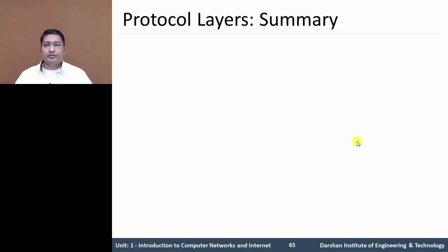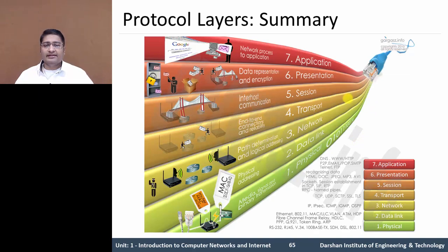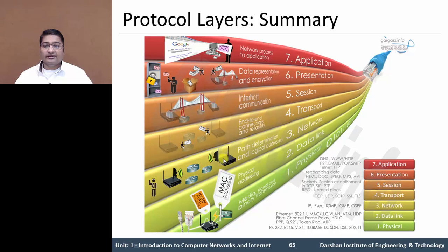Let us see a summary of the Protocol Layers. This graphical representation shows two models. The OSI model includes Application Layer, Presentation Layer, Session Layer, Transport Layer, Network Layer, Data Link Layer, and Physical Layer. At the Physical Layer: Media, Signals, and Binary Transmission. Physical Addressing at the Data Link Layer. Routing and Logical Address at the Network Layer, along with different network devices. End-to-End Connection and Reliable Delivery at the Transport Layer.